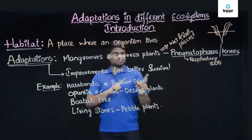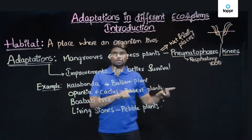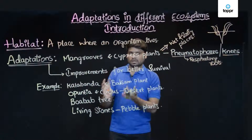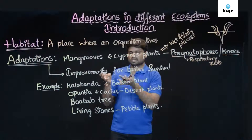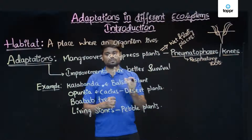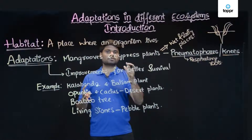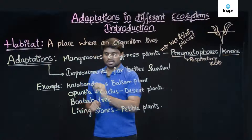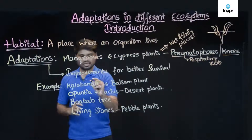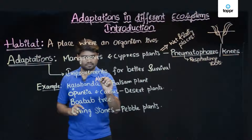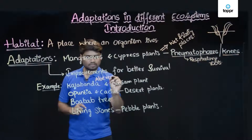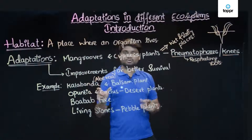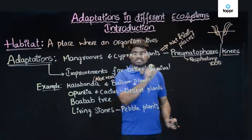You do not find these respiratory roots in any other plants growing in normal conditions. This proves that plants, when made to live in specific conditions, undergo certain improvements to survive better. Now we have another example: Kalabandha, whose scientific name is aloe vera. These days we hear about this plant a lot because it is also used in beauty products. So aloe vera and balsam plant.